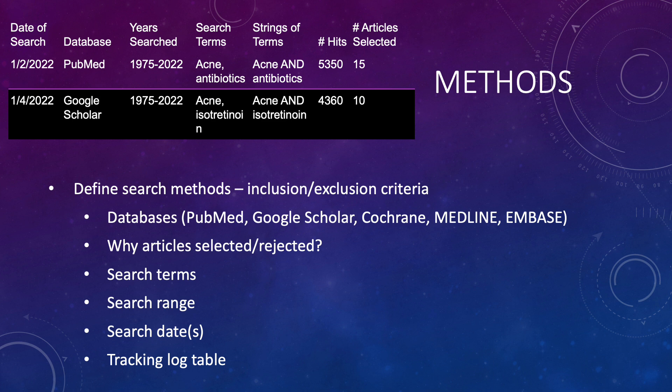In your methods section, you're going to talk about the search strategy you used — how you went about searching the literature. What were your inclusion and exclusion criteria? What databases did you search? What were the search terms? What was the range of dates you searched? And what was the date you actually conducted your search, so people know what literature came out afterward. There's also a tracking log table you can use to keep track of these things.